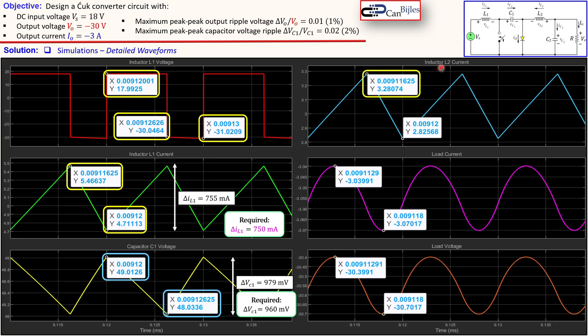Looking at the inductor current L2, again, maximum and a minimum. Looking at the peak-to-peak will be then 455 milliamps, looking at these two values here. And we had required of 450 milliamps. So again, you see that it is very close to each other.